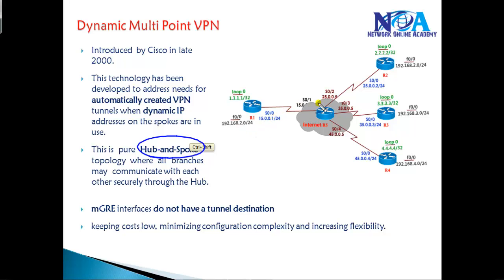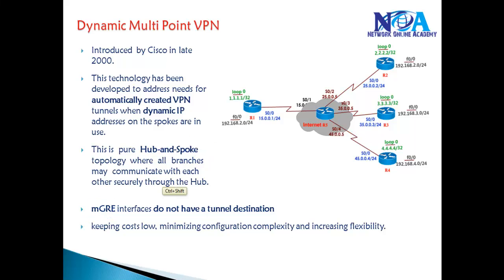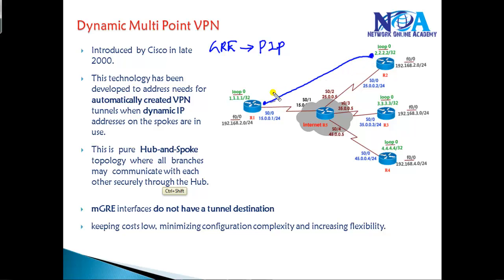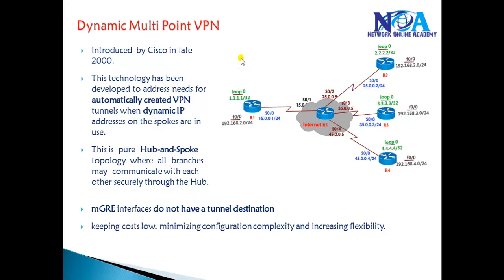DMVPN is a technology more similar to Frame Relay implementations, allowing multipoint VPNs where from Router 1 we can have multiple connections to different spokes. It's more like a Frame Relay hub-and-spoke terminology, where GRE tunnels are built using Multipoint GRE instead of normal GRE. With normal GRE, you have point-to-point connections — to go from Router 1 to Router 2 you create one point-to-point interface, from Router 1 to Router 3 another, and from Router 1 to Router 4 yet another.